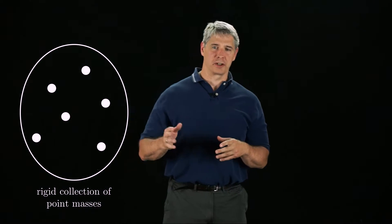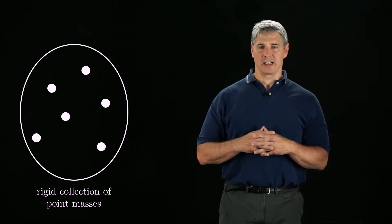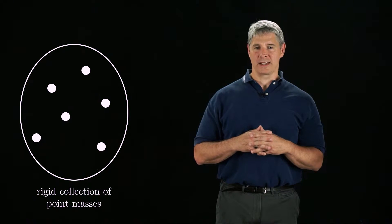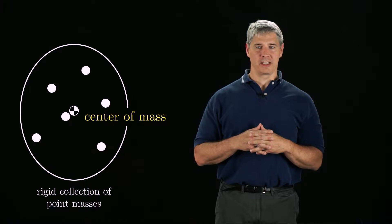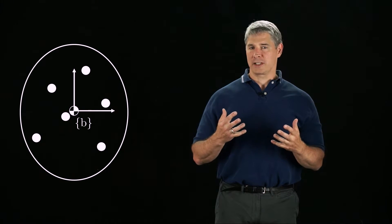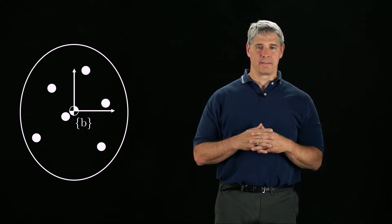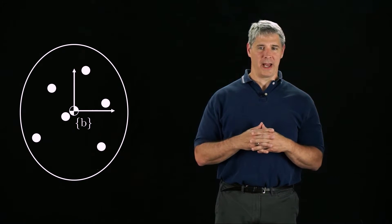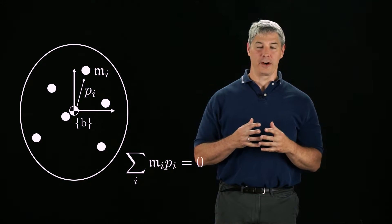Let's start with the dynamics for a single rigid body. You can think of a rigid body as a collection of point masses that are rigidly attached to each other. We define the center of mass to be the unique point at the centroid of the mass distribution, and we fix a frame b to the rigid body at the center of mass. The definition of the center of mass is that the sum of the mass-weighted vectors to the point masses in the b-frame is zero.